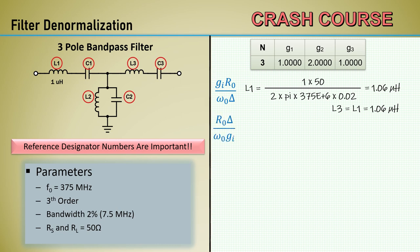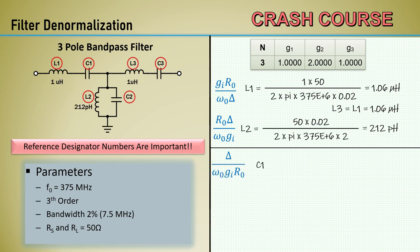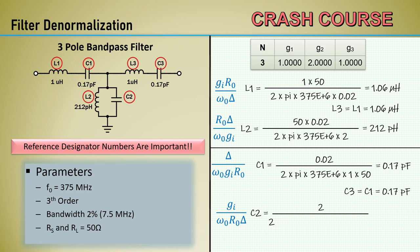While we are doing inductors let's bring in the denormalization equation for the shunt inductor. L2 equals 50 times 0.02 divided by 2 times pi times 375 e to the 6th times 2 which equals 212 picohenry. Let's bring in the equation for the series capacitor. C1 equals 0.02 divided by 2 times pi times 375 to the e6 times 1 times 50 equals 0.17 picofarad. C3 is also in series and the coefficient for the element 3 is also 1 so C3 equals C1. Lastly the equation for the shunt capacitor C2 equals G2 coefficient 2 divided by 2 times pi times 375 e to the 6th times 50 times 0.02 equals 848 picofarad.